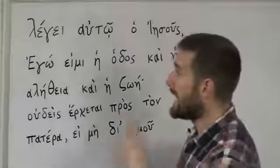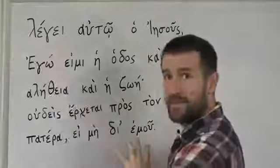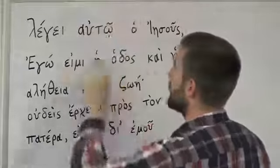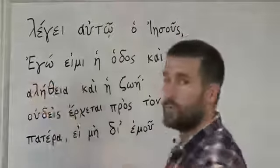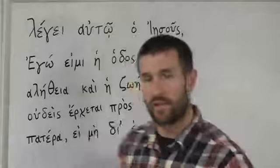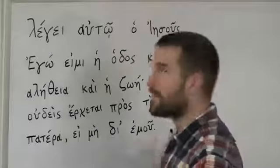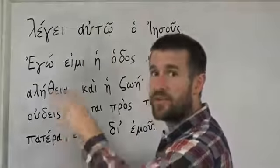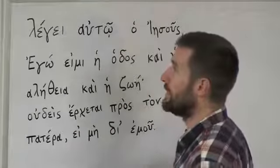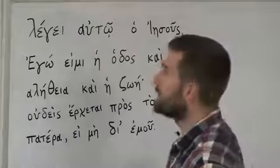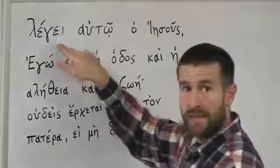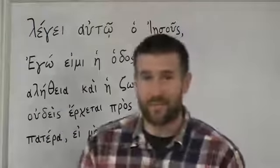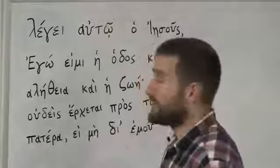So again, you should know the alphabet and understand that these accent marks tell you where to put the stress on each word. Let's go through this word by word, and let me give you some tips for memorizing this verse and understanding what the words mean for a total beginner. The first word, legei, means 'says' or 'saith.'